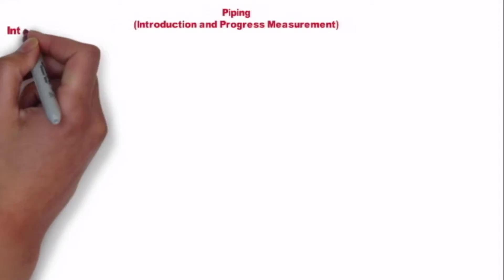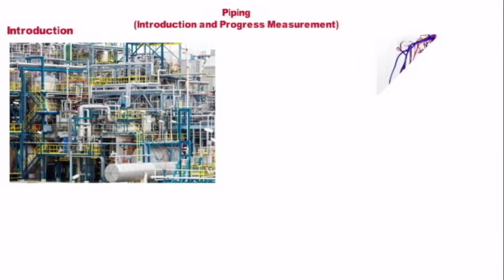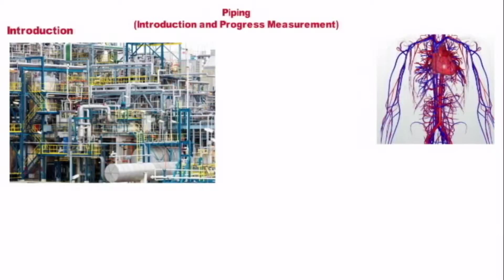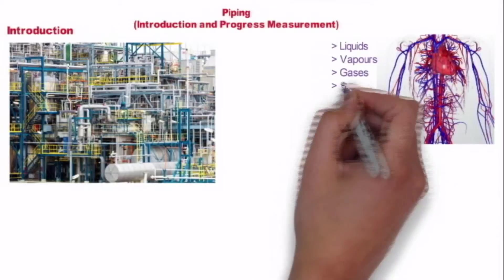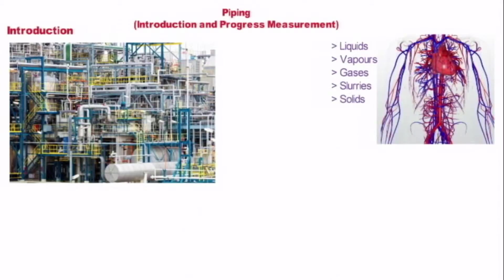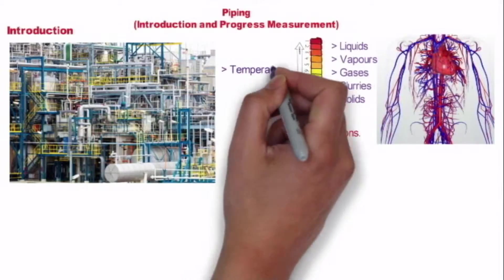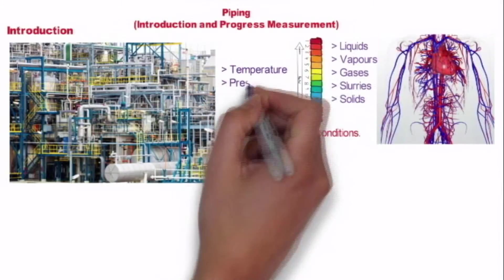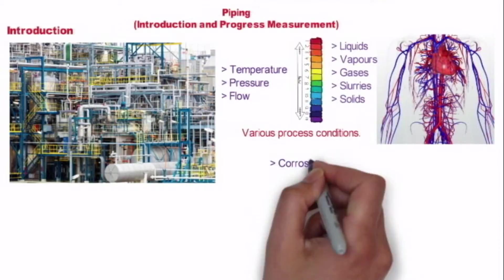Pipe and piping systems are the veins and arteries of the chemical process plant, used for transportation of liquid, vapor, slurries, solids, etc. under various process conditions. The network of pipes is subjected to extremities of temperature, pressure, flow and combination of these. In addition they are exposed to corrosion, erosion, toxic conditions and radioactivity.